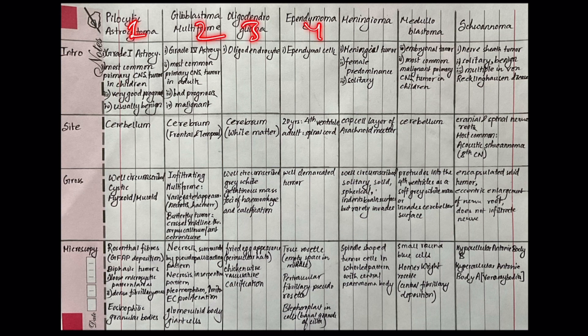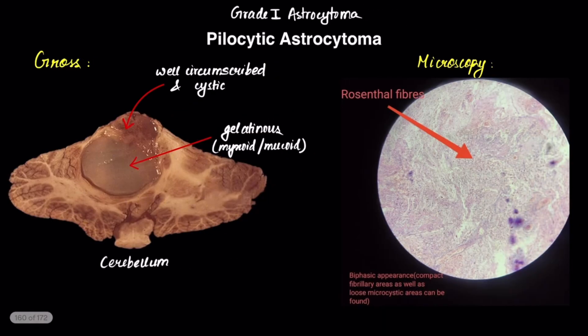So we have altogether 7 major primary central nervous system tumors to cover. First, we have pilocytic astrocytoma, which is also grade 1 astrocytoma. It is a tumor of astrocyte cells and this is the most commonly seen primary central nervous system tumor in children, and the site of appearance is the cerebellum.